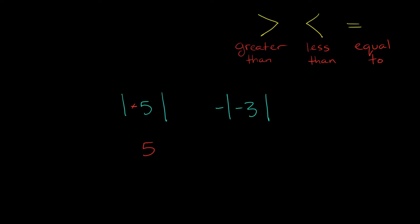What's the absolute value of negative 3? Again, the negative sign basically just goes away and we're just left with 3. But this negative sign is outside of the absolute value bars, so this negative sign doesn't just go away — we keep it. So now the two numbers we're comparing are 5 and negative 3.